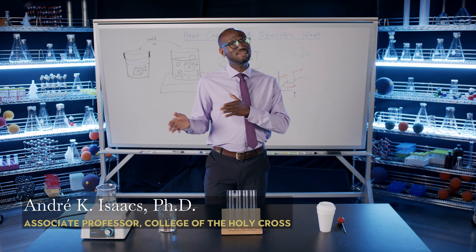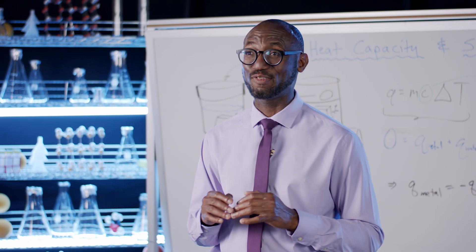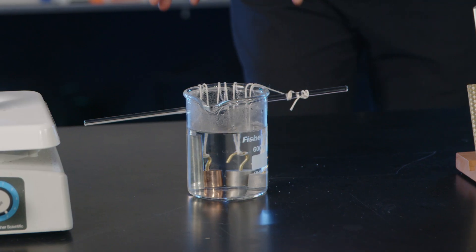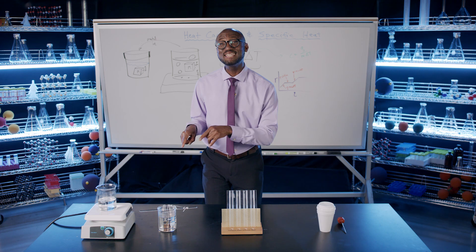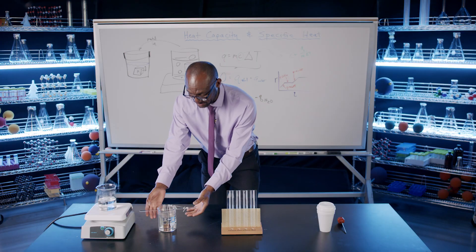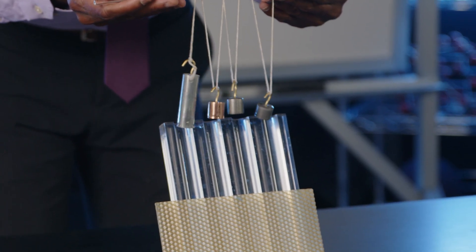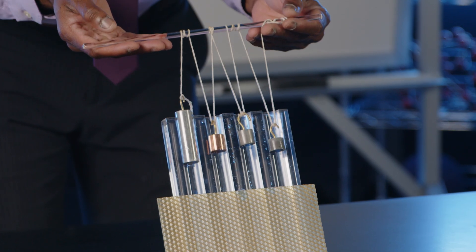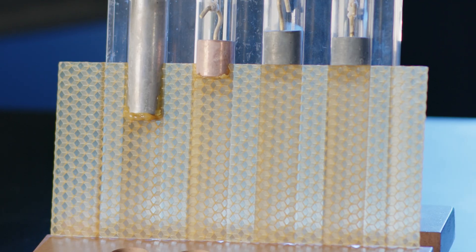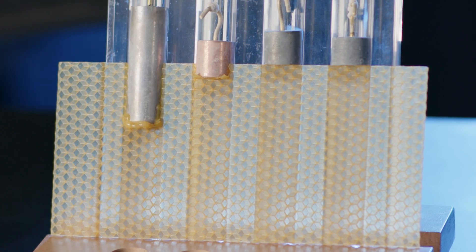Different substances can absorb and give off heat to differing degrees. Let's demonstrate this qualitatively using different metals. These metals all have the same mass. I have heated them to the same temperature, and I'm going to place them on this wax sheet and allow them to melt down.